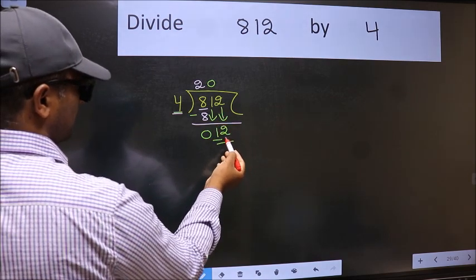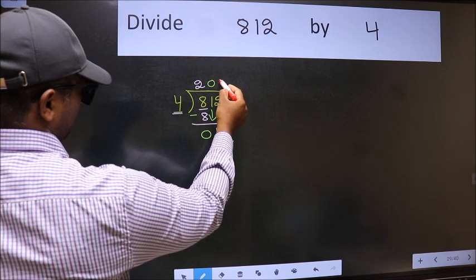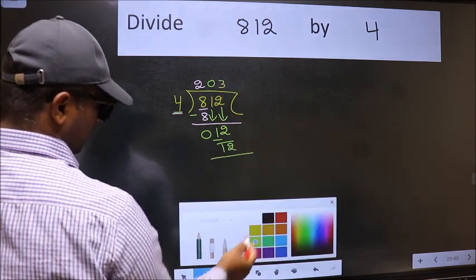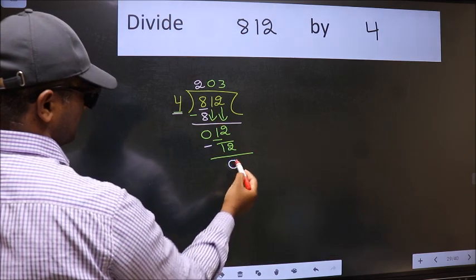Now 12. When do we get 12 in the 4 table? 4 times 3 is 12. Now we should subtract. We get 0.